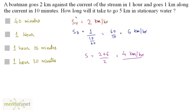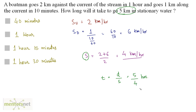Now we have been asked how long will it take to go 5 kilometers in stationary water. We have been given the distance and we have the speed. Time is equal to distance upon speed, and that's distance 5 by speed 4, in hours. Solving this we get 1 and 1/4 hours — 1 hour and 15 minutes. So our answer is option C.